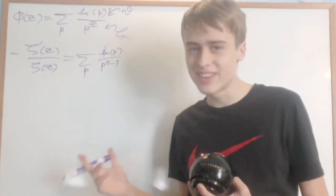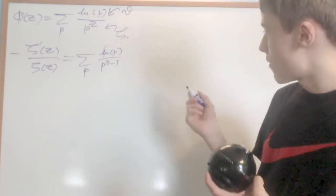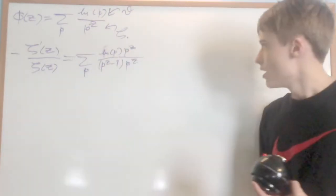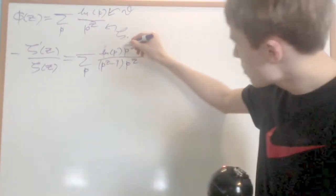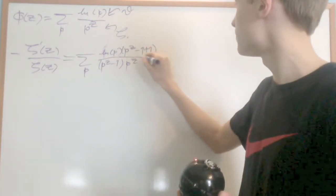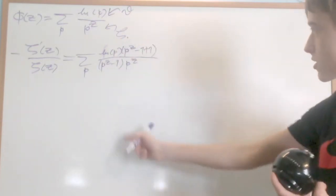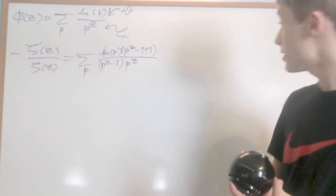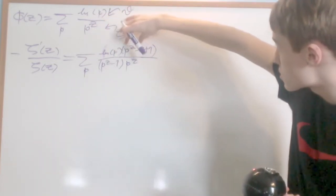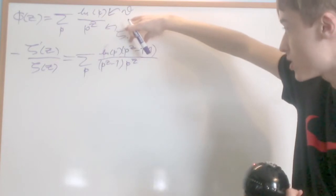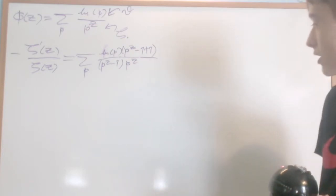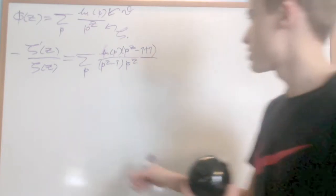How can we get rid of that minus 1? The way I'm going to do it is by multiplying the top and the bottom by p to the z, and then rewriting p to the z up here as p to the z minus 1 plus 1. Those cancel each other out — it's the same thing — but the good thing is that natural log of p can be distributed in, giving natural log of p times p to the z minus 1, and then we can cancel the p to the z minus 1 on numerator and denominator.